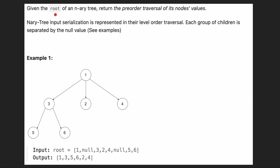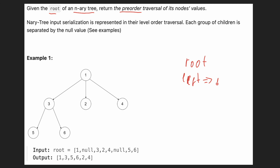Hi everyone, it's Orkin. Today we have a problem where we are given a root of an N-ary tree and we need to post-order traverse the tree and return all node values. In post-order traversal, we first visit the root, then we visit children from left to right.